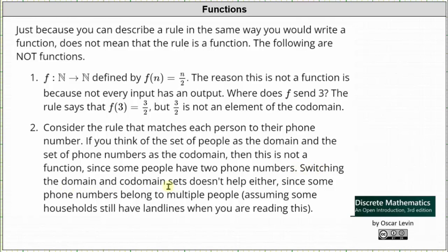Switching the domain and codomain sets doesn't work either, since some phone numbers belong to multiple people. For example, two people or a family may share a cell phone, or some households may still have a landline, meaning the input of a phone number may have multiple outputs — which is why it would not be a function. I hope you found this helpful.